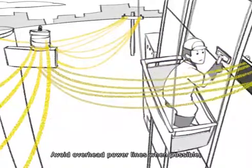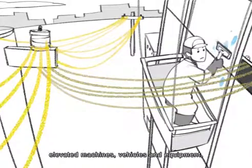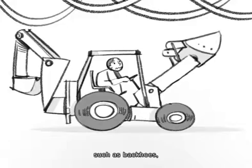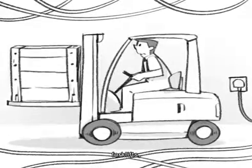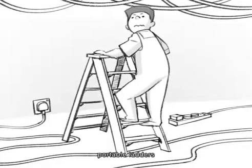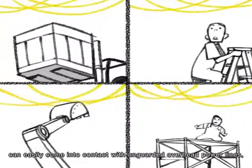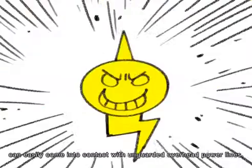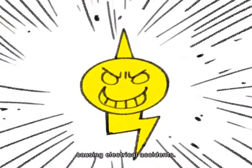Avoid overhead power lines when possible. Elevated machines, vehicles and equipment such as backhoes, forklifts, portable ladders and scaffolding can easily come into contact with unguarded overhead power lines causing electrical accidents.